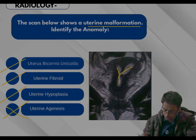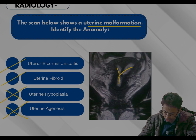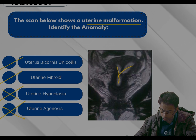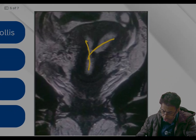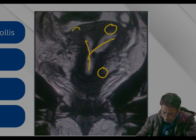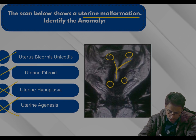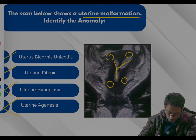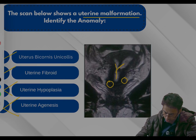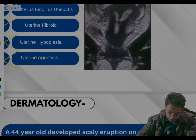Uterine hyperplasia — no, the uterus is fine and there is no hyperplasia; it is not atrophic at any part. Uterine fibroid would present as a mass lesion somewhere — a leiomyoma, a benign mass in the uterus — but that is not present here. So this is not a leiomyoma or uterine fibroid.